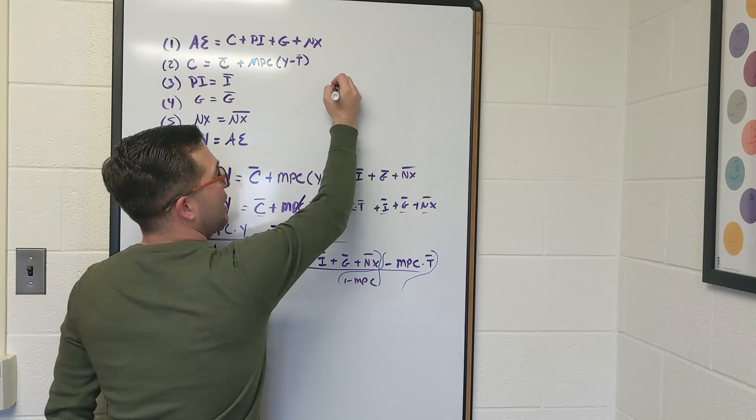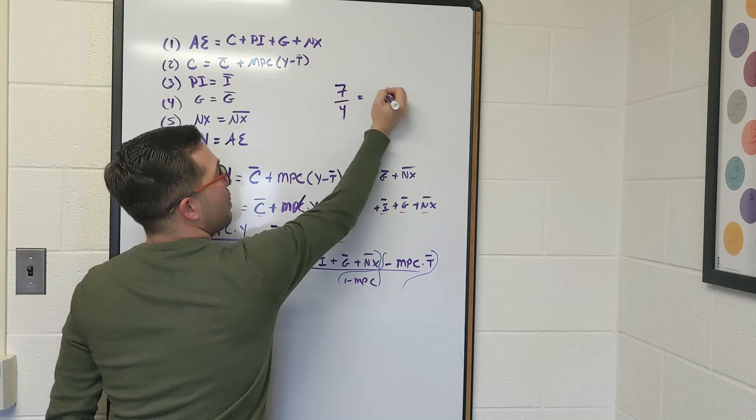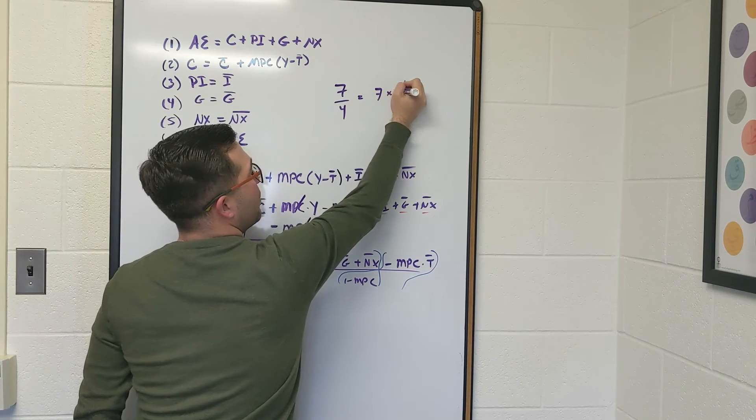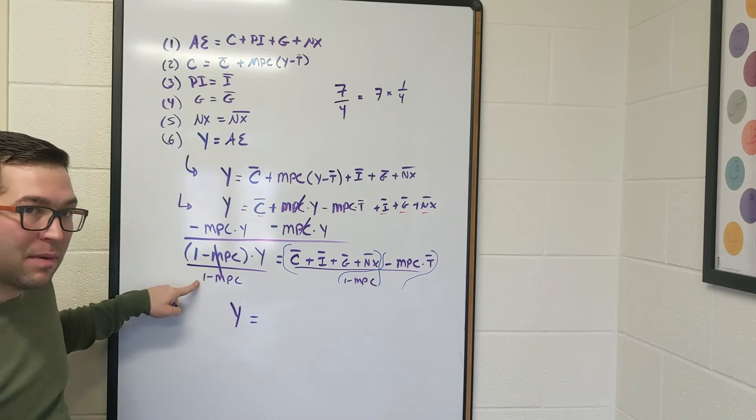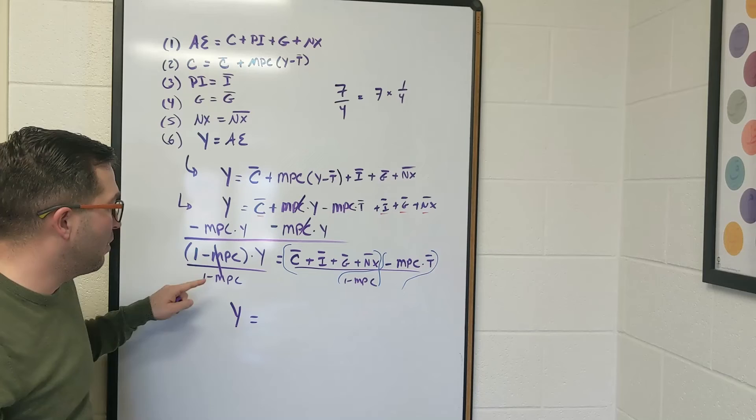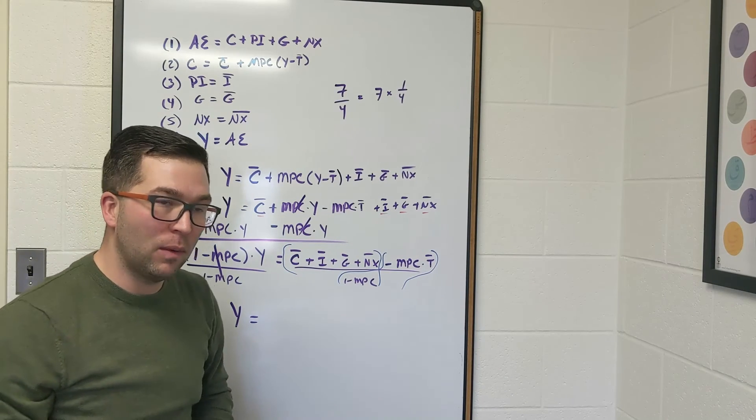For example, if I want to divide by 4, like 7 divided by 4 is the same thing as 7 times 1 fourth. So what I'm going to do here is instead of dividing by 1 minus MPC, I'm going to multiply this by 1 over 1 minus MPC. And we're going to get the following.